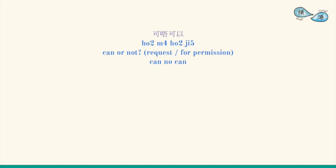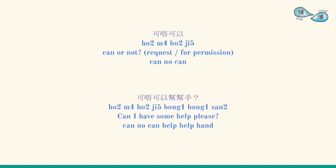可唔可以? Also means 'can or cannot', but it's usually used as a request or asking for permission. For example: 可唔可以幫幫手? (Can you give me a hand?)